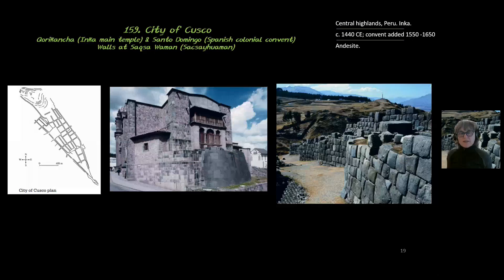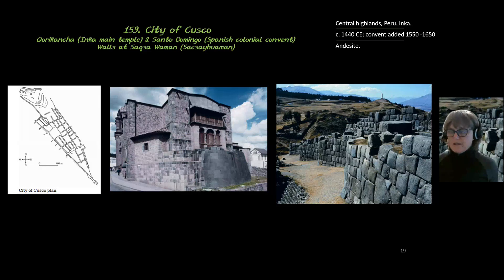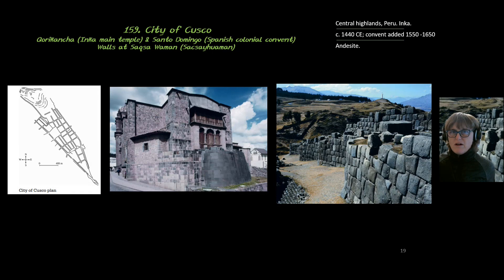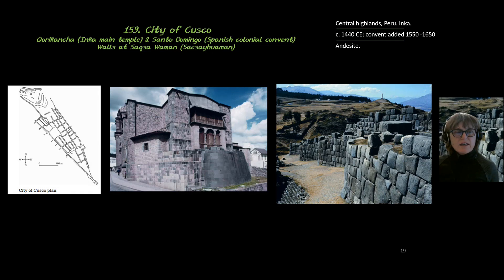Piece 159, the city of Cusco, includes three images, and I'm going to cover them all — all the form of each, all the function, all the content, all the context.